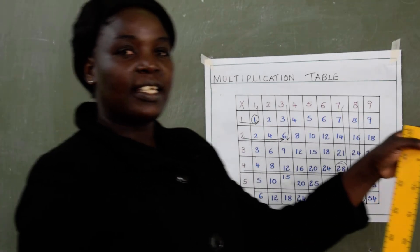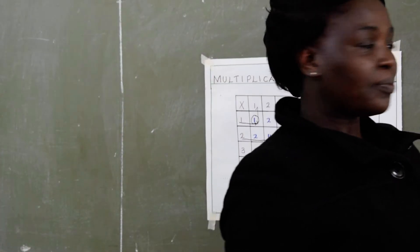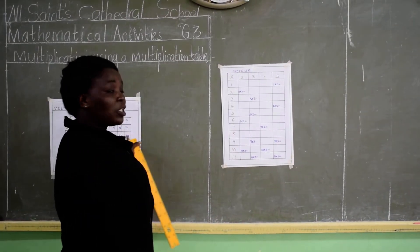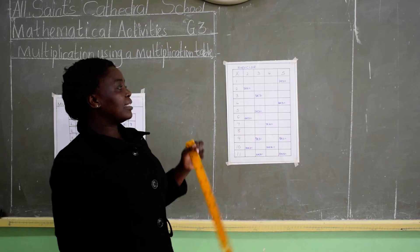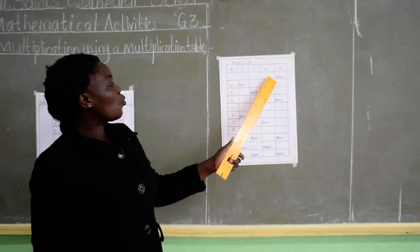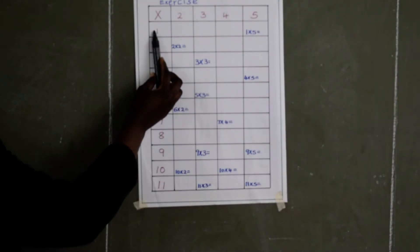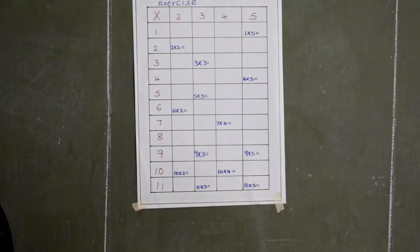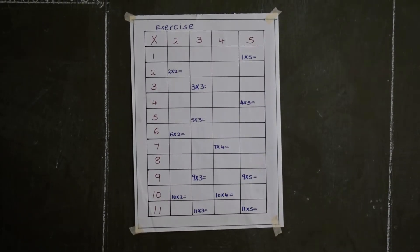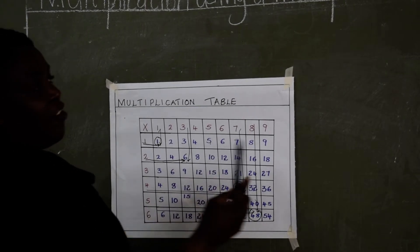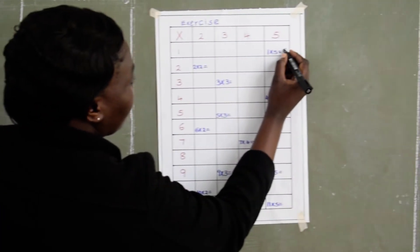Now I have an exercise here where I want us to use this multiplication table to answer. And our first question is 1 times 5. What do you get? I will look at my multiplication table. 1 times 5 is 5. Then I write there, 5.